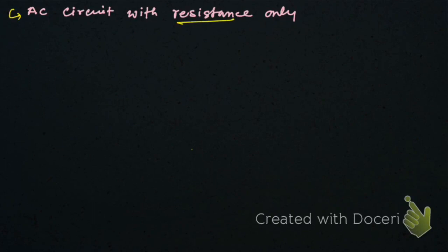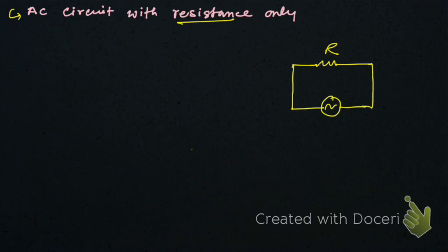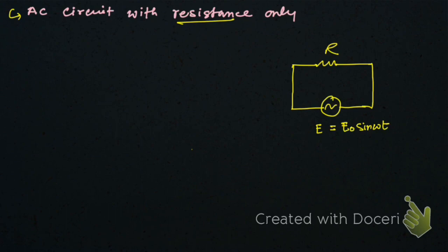Let us discuss AC circuit with resistance only. Suppose we have a circuit with a resistance R connected to an alternating voltage source. The voltage is given by e = e₀ sin(ωt), where e₀ is the maximum EMF and ω is the angular frequency, that is 2π/T.